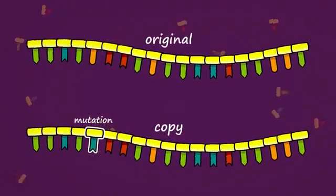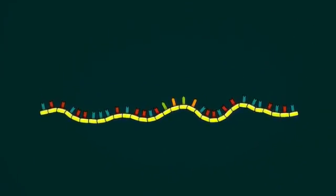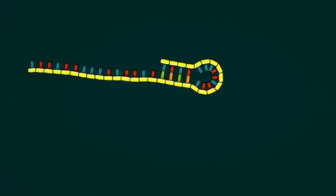As amazing as replication is, base pairing also gives RNA chains a second special ability. When placed in water cool enough for base pairing, but without enough free nucleotides for replication, chains will fold up and base pair with themselves.